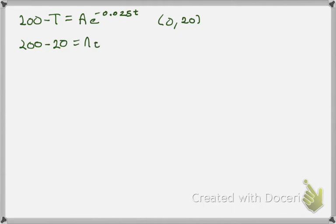And this is going to be Ae to the negative 0.025 times 0. That actually is going to work out quite nicely for us because this part here is just e to the 0 and e to the 0 equals 1. So we have 200 minus 20 which is 180 equals A, and now we have our solution.